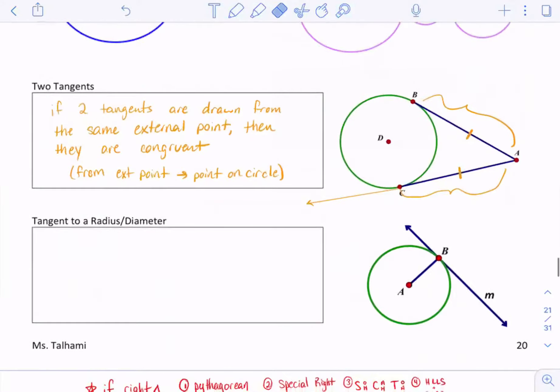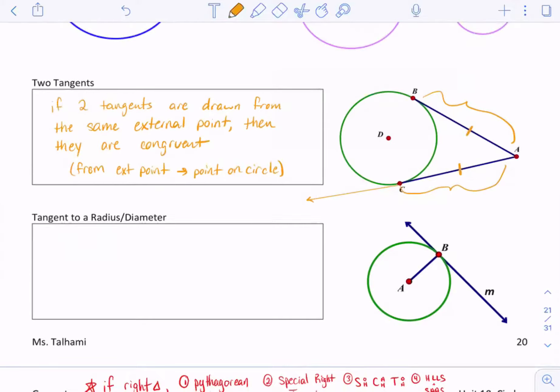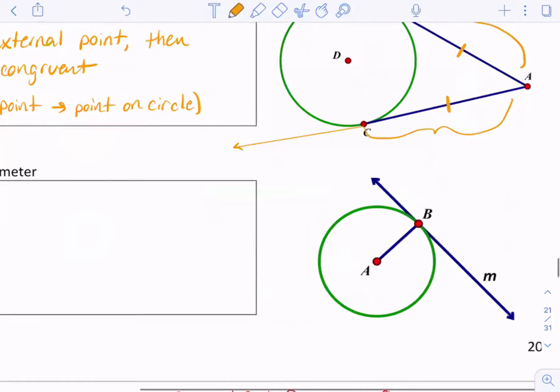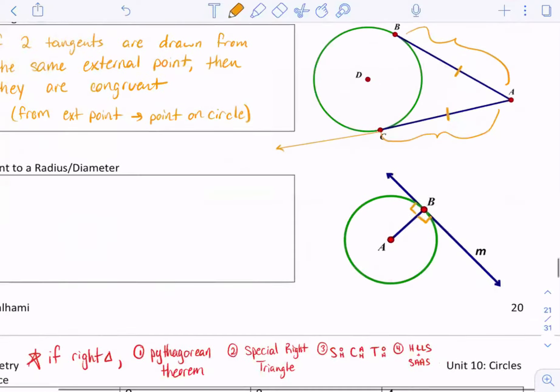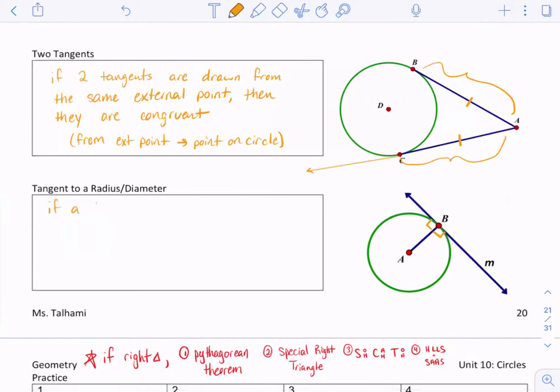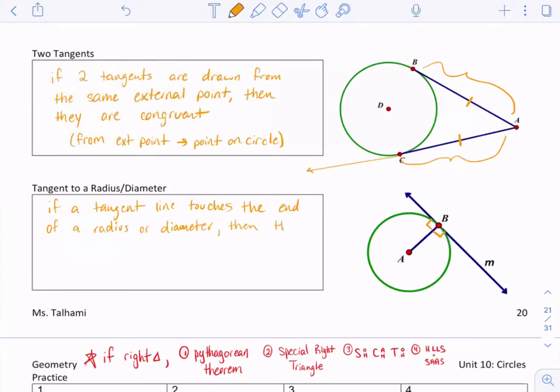And then here's another rule with a tangent line. So if a tangent line touches the end of a radius or a diameter, then those lines are perpendicular. So I'm going to write that. So if a tangent line touches the end of a radius or diameter, so it has to be a line from the center, perpendicular.